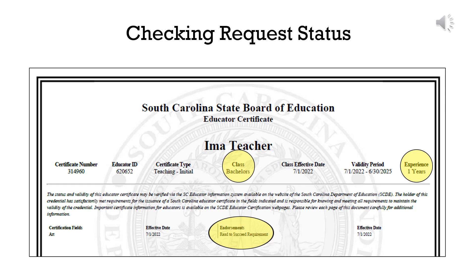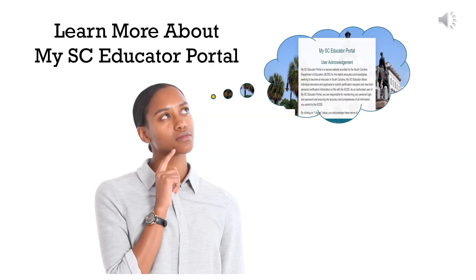Once you have submitted a change request, you should monitor its progress regularly. Keeping your information up to date is critical since years of experience, additional degrees, and any endorsements earned are listed on your Educator Certificate and affect your teacher pay rate. If anything on a certificate is not correct, check that you have submitted all required documents in the portal and look for any notifications indicating documents are in review or waiting on another action. Thank you for your interest in MySC Educator Portal. This screencast covered change requests in the portal — please view the other screencasts in this series to learn more.